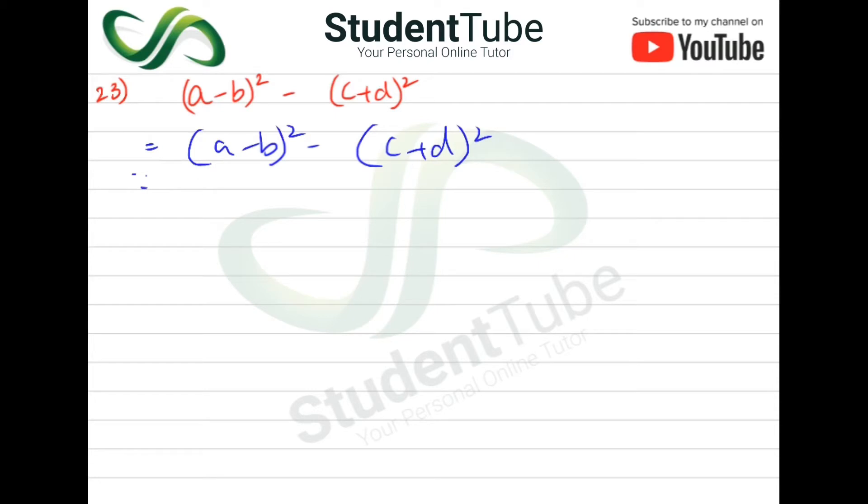As we know that a² - b² is equal to (a-b)(a+b).